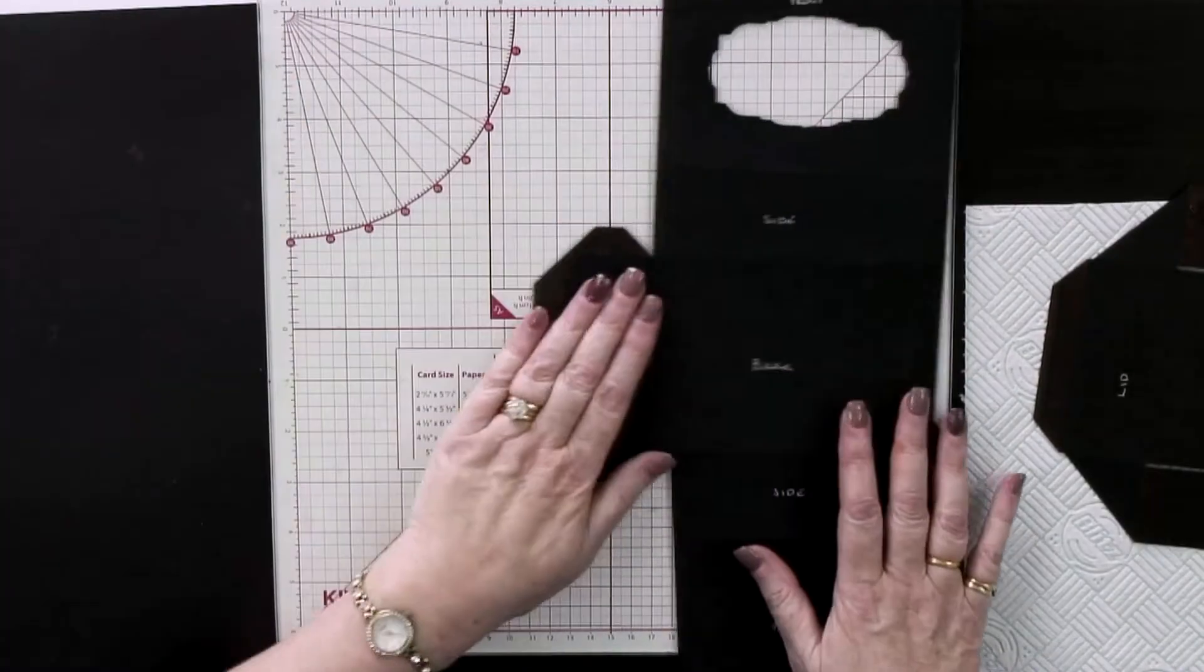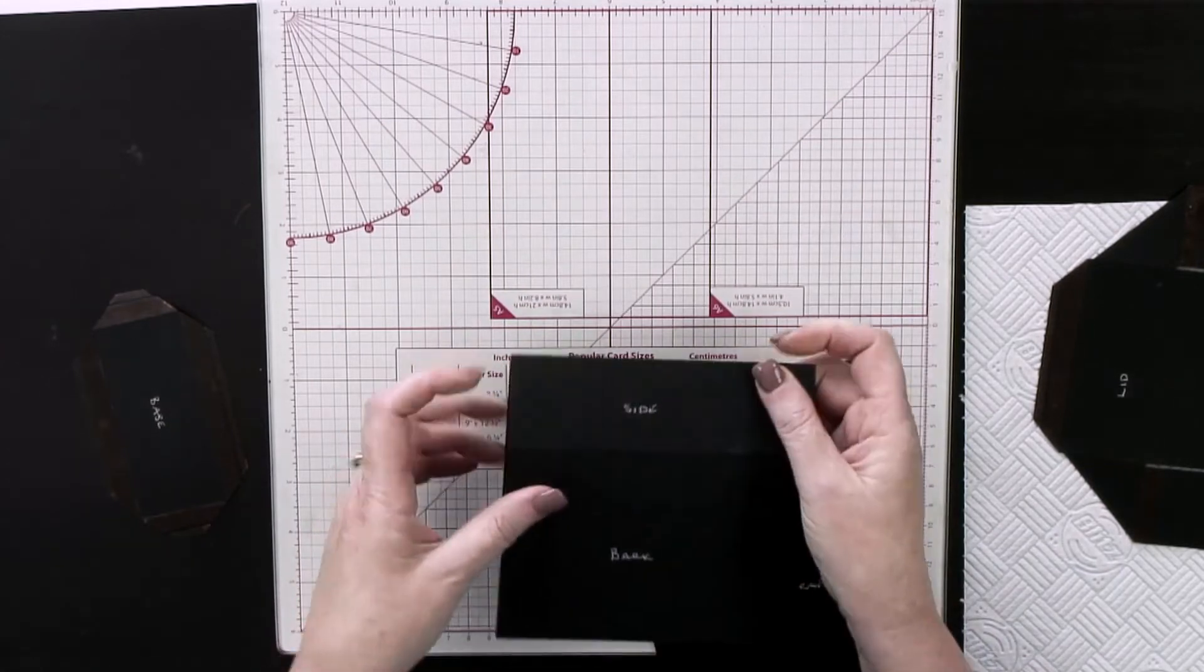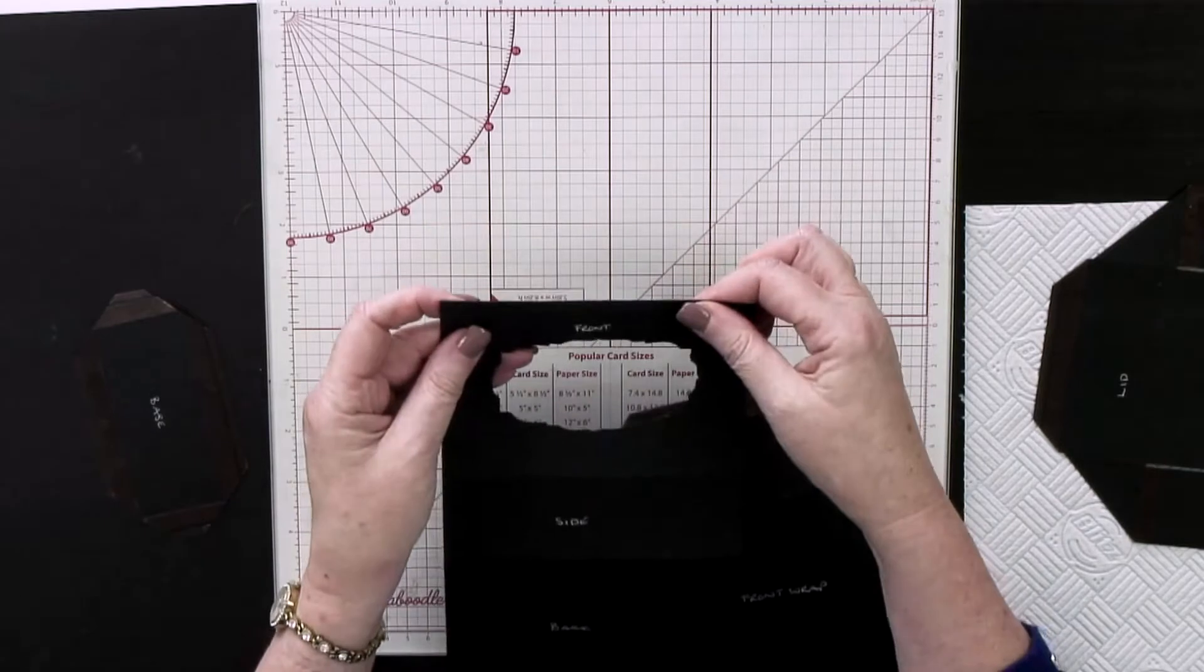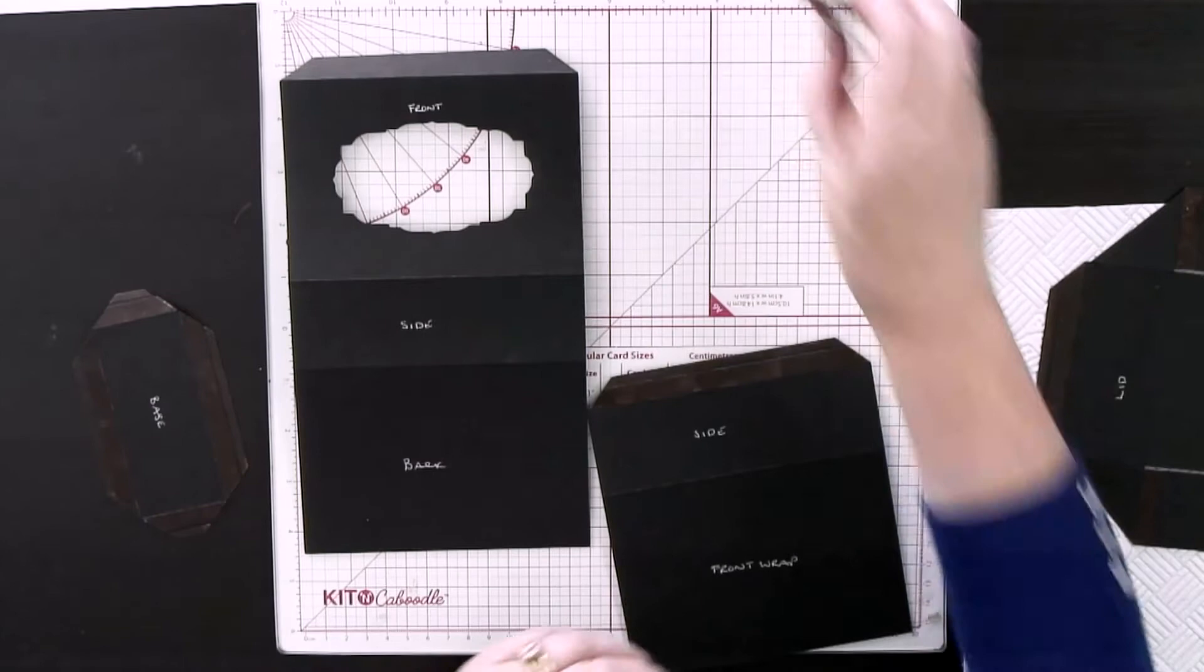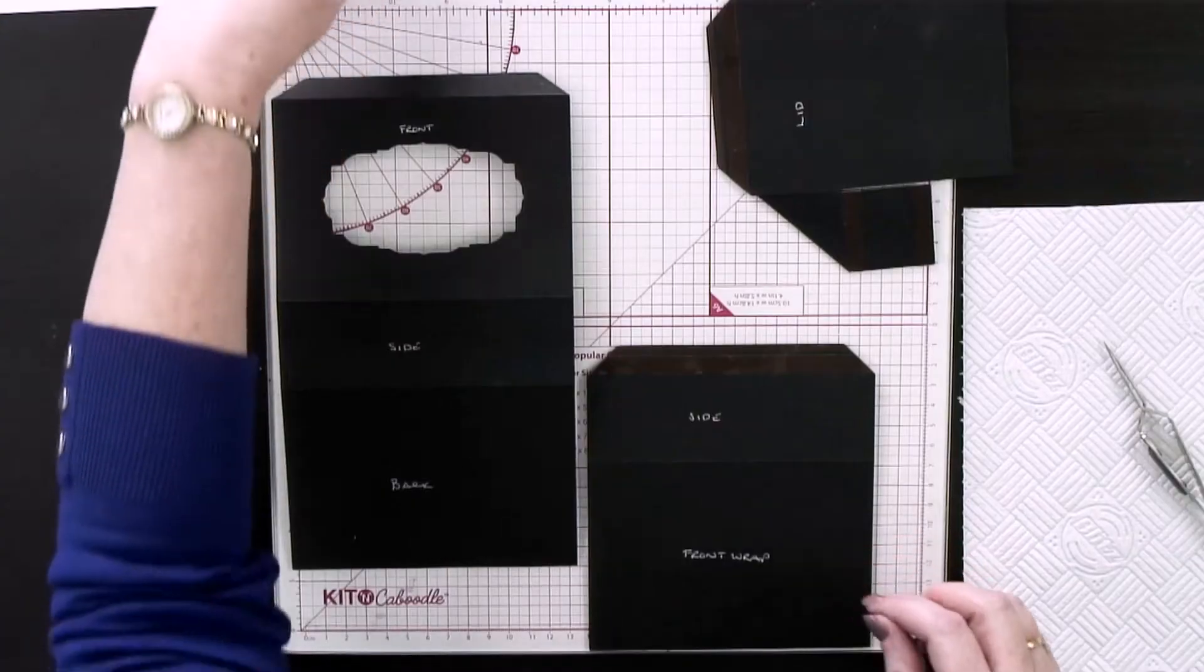I've folded and scored all the perforation lines and they're all mountain folds. Then I've got red liner tape. You can use wet glue if you want, just be aware that wet glue will squidge a little bit.